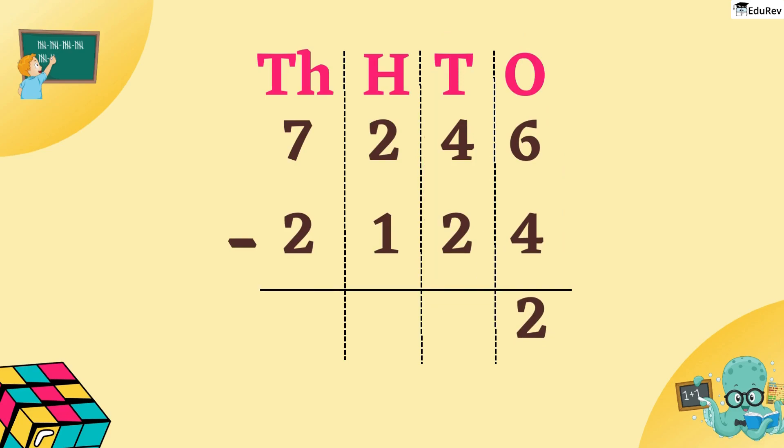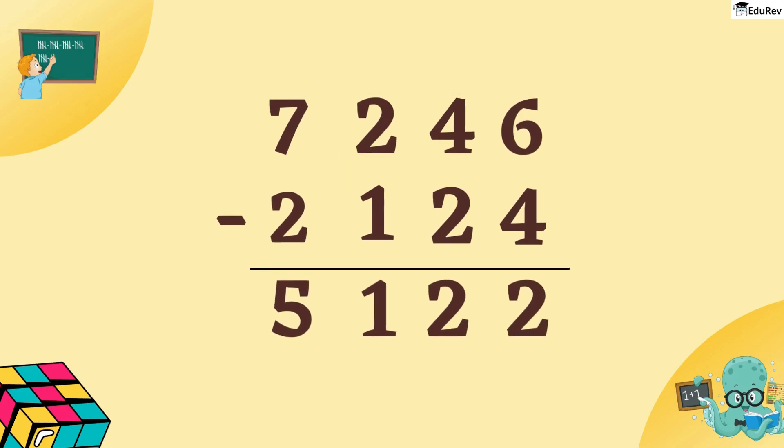In 10s column, there is 4 minus 2 which is 2. In 100s column, we have 2 minus 1 which is equal to 1. In 1000s column, 7 minus 2 which is 5. The answer we get is 5122.